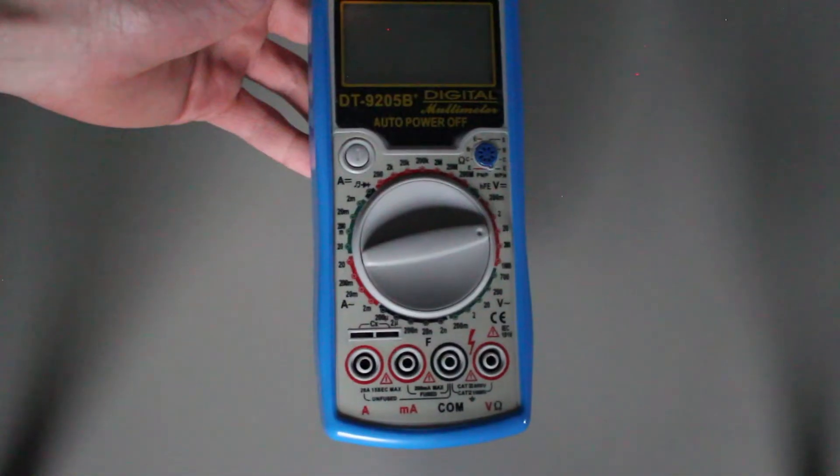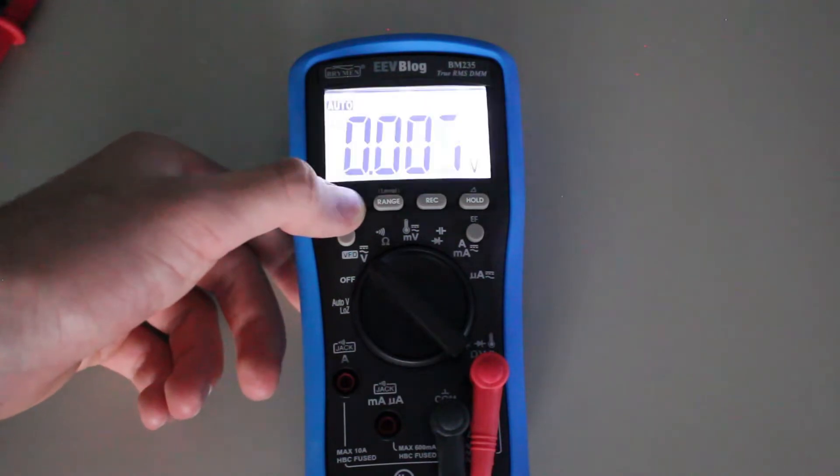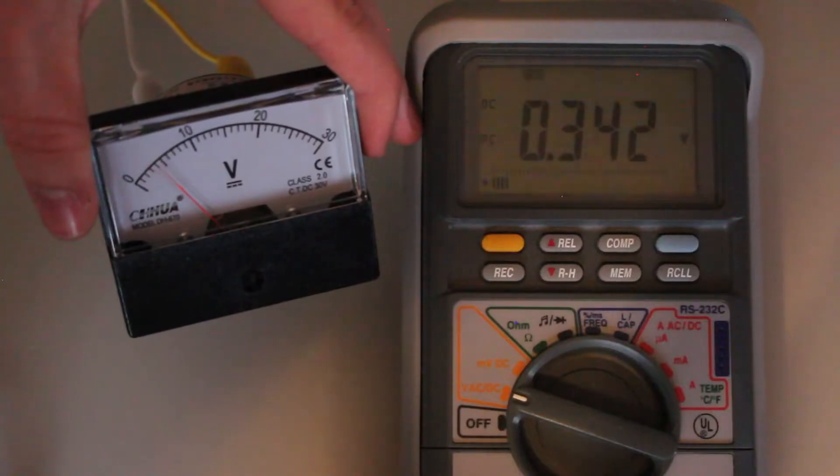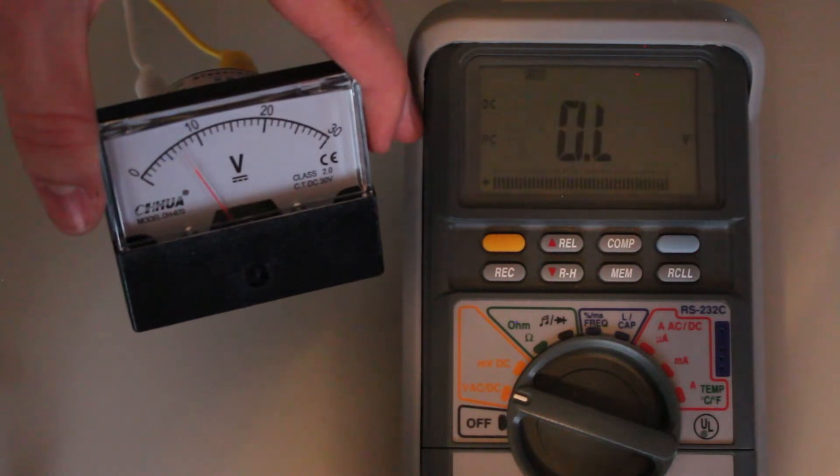Let's quickly run through a few features that a multimeter might have, but they're not necessarily necessary. First, a backlight so that you can see what you're measuring. A bar graph to let you have the advantages of a digital multimeter and an analog multimeter at the same time.